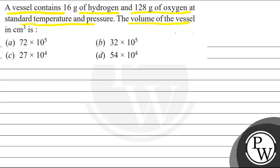The volume of the vessel in cm³ is: (a) 72 × 10⁵, (b) 32 × 10⁵, (c) 27 × 10⁴, (d) 54 × 10⁴. We have to choose the correct option.